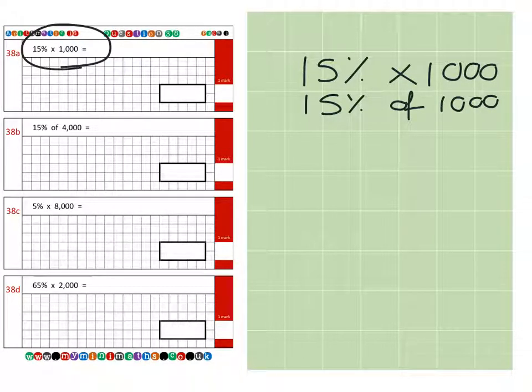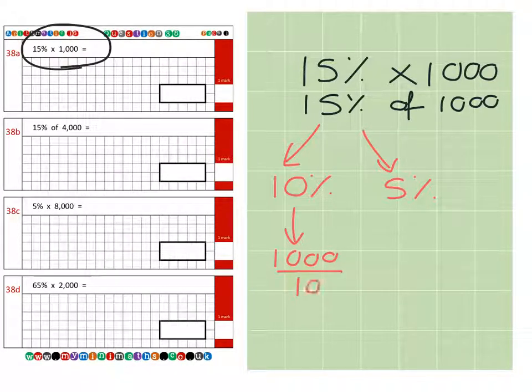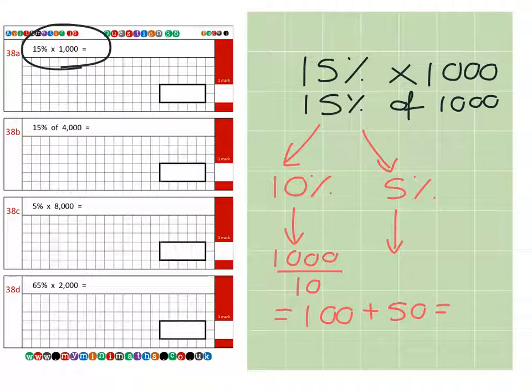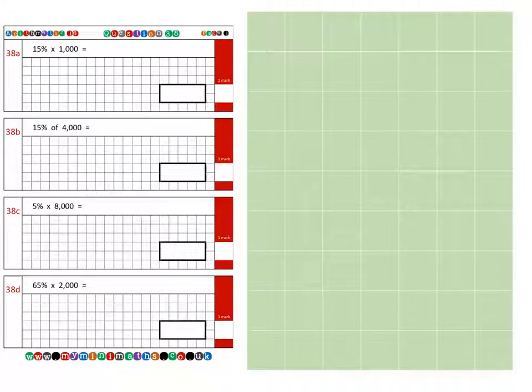The first thing we need to do is calculate 10% and then 5%. To look at 10%, there are 10 tens in 100%. So if we divide the 1,000 by 10, that will give us 100. And then 5% is half this, which is 50. We have a grand total and final answer of 150.